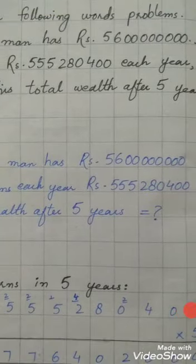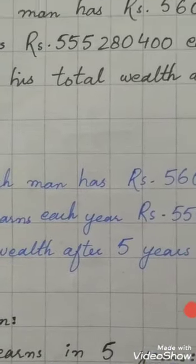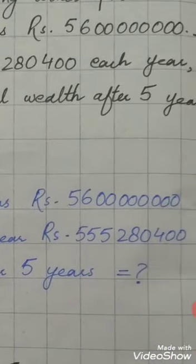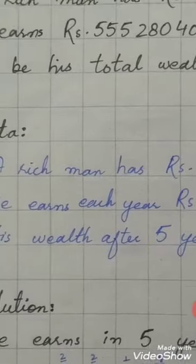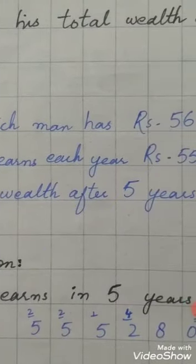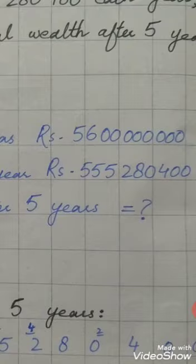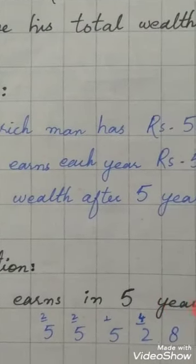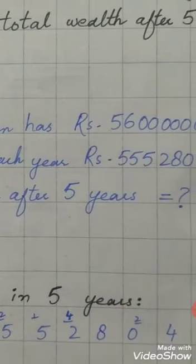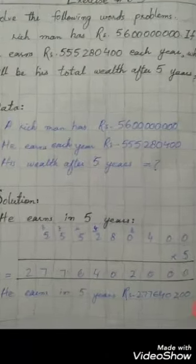We have given information: a rich man has rupees five billion six thousand million. Second information, he earned each year rupees five hundred fifty five million two hundred eighty thousand four hundred. His wealth after five years we have to find out.